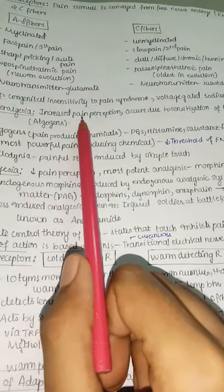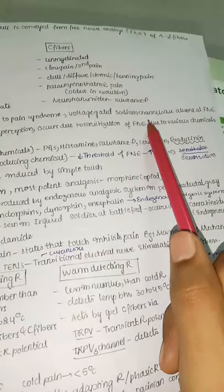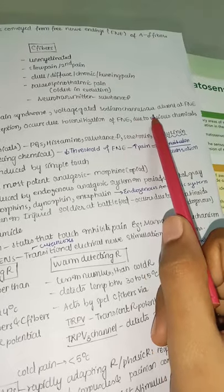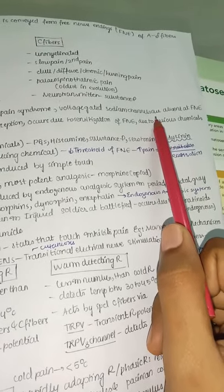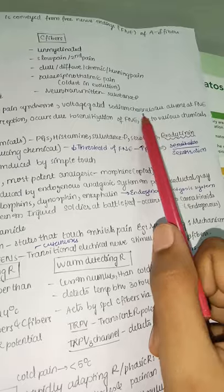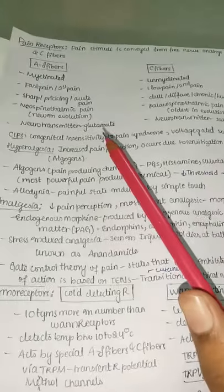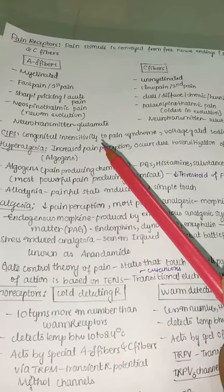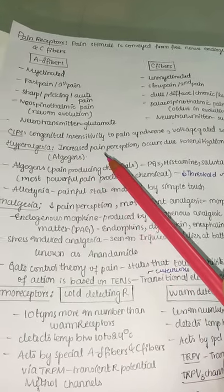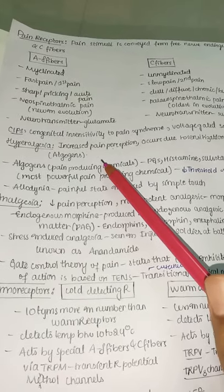CIPS — congenital insensitivity to pain syndrome — is a condition where the person cannot feel pain because voltage-gated sodium channels are absent at the free nerve endings, so pain signals cannot be generated.